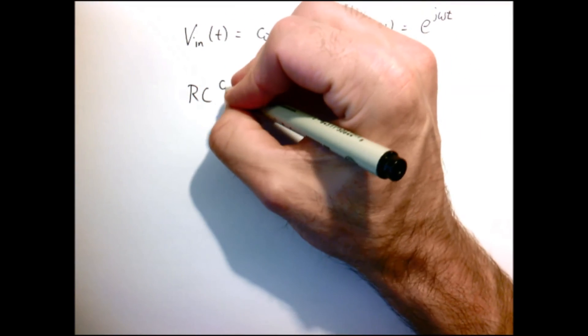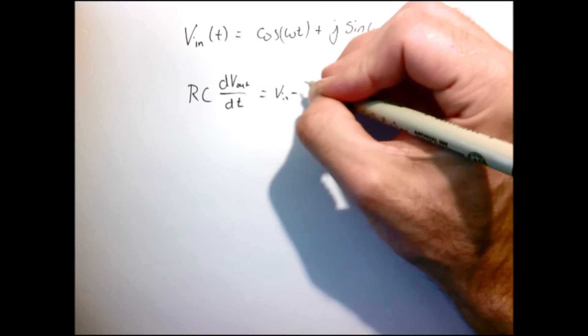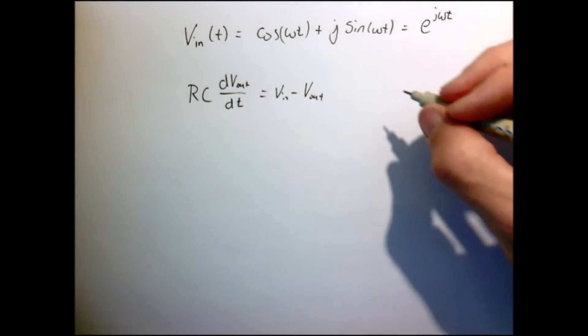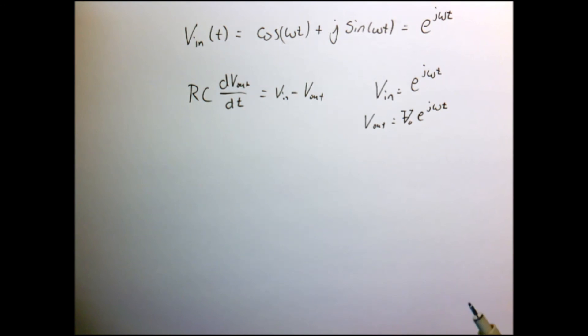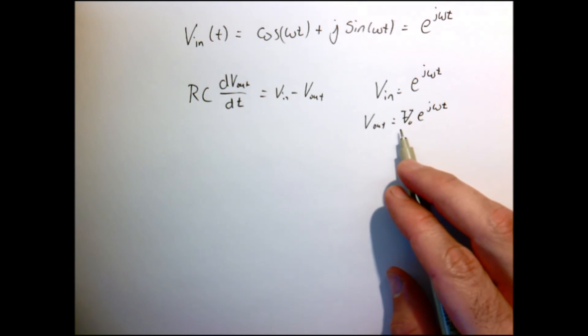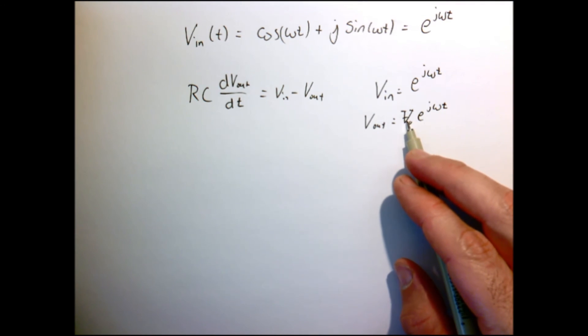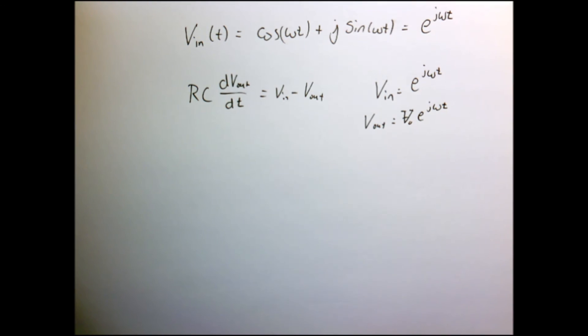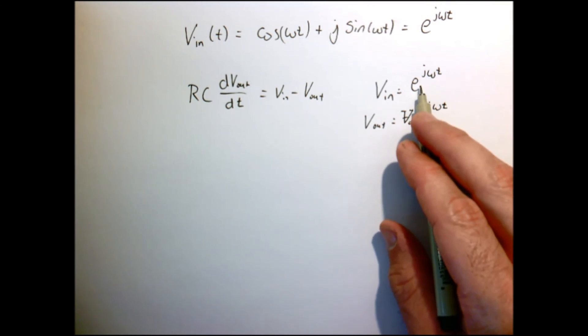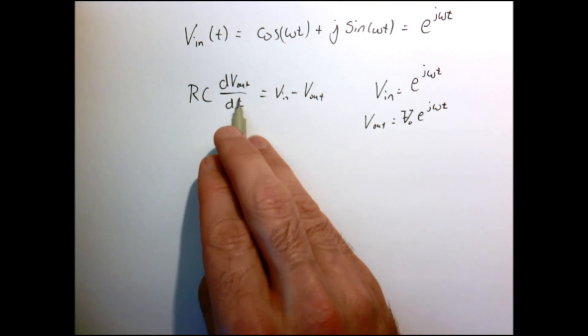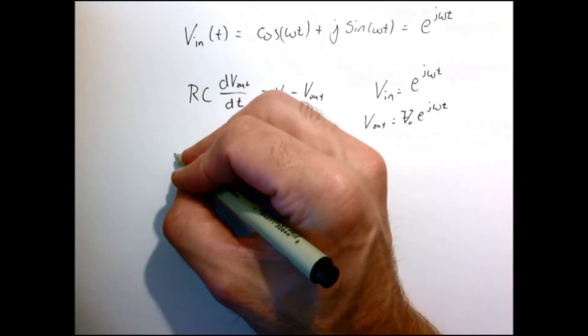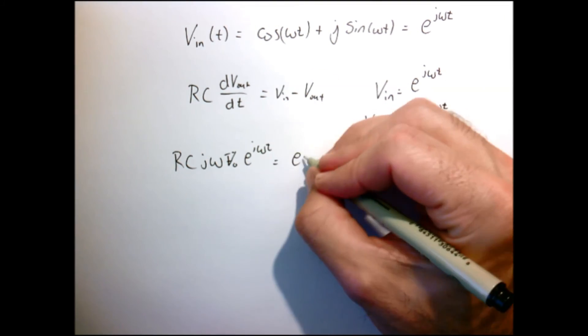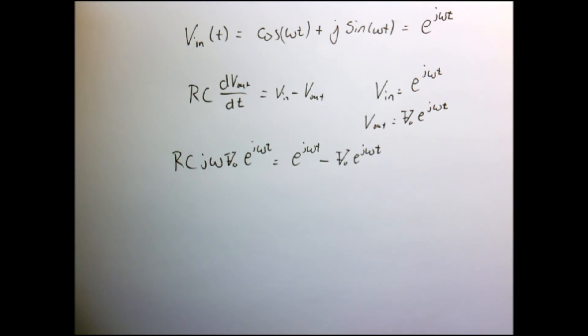So recall that for our circuit of interest, that was our equation. So we're going to assume that vn is one volt times e to the j omega t, and that v out is some complex number v naught times e to the j omega t. Now let's just plug these things in. So I can take the derivative of dv out dt quite easily.